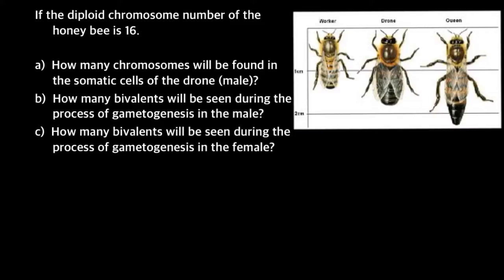In our problem we have a statement that the diploid chromosome number of the honeybee is 16. Since the diploid individuals are female, the worker would have 16 chromosomes and the queen would also have 16 chromosomes because the queen is diploid and female. The drone is haploid, so the chromosome number would be half, which is eight. So we answered our first question: how many chromosomes will be found in the somatic cells of the drone or male? The answer is eight chromosomes.